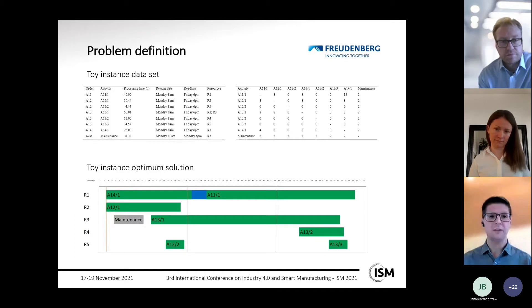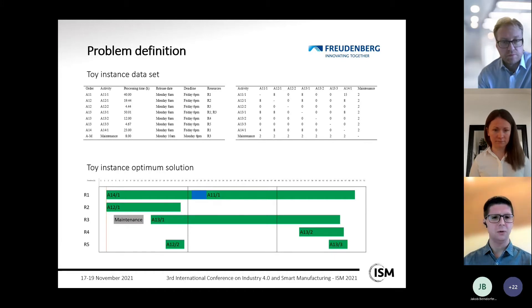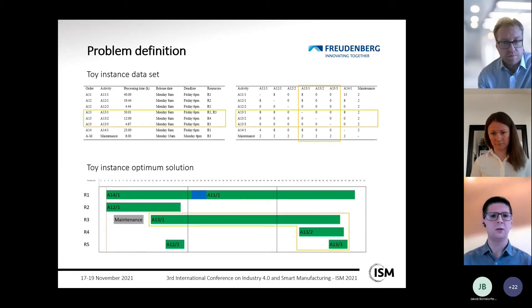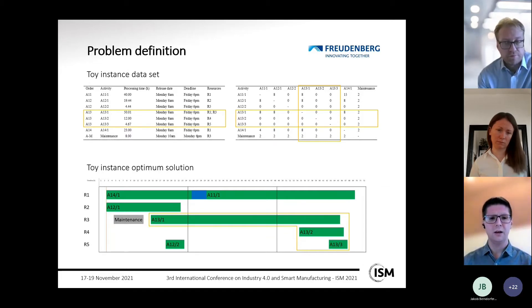Since the toy instance dataset is quite small, it can be solved to an optimum schedule manually. The toy instance optimum solution is shown at the bottom of the slide, displaying all activity processing times in green, changeover times in blue. Not only real work steps for processing products are considered, but also maintenance work steps. For one exemplary order, A13, we can see it is comprised of three activities with all the necessary data, scheduled in the given sequential order in the optimum solution.